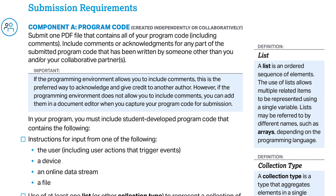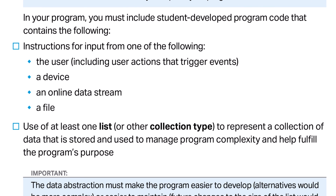Component A includes the entire code for your program. Your program must include instructions for input from one of the following: the user, a device, an online data stream, or a file. For most programs, the user input will come from the keyboard or mouse. Make sure you don't hard-code data into the program and try to consider that input.